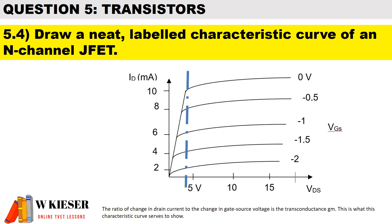The ratio of the change in drain current to the change in gate source voltage is the transconductance GM. This is what the characteristic curve serves to show.